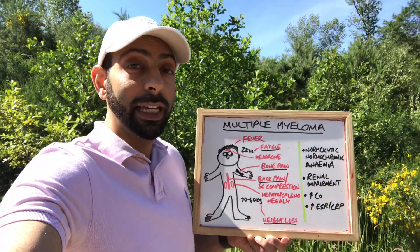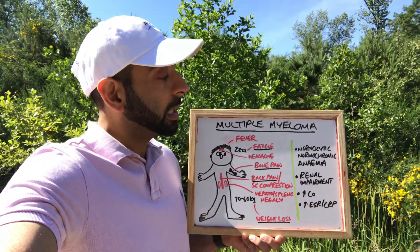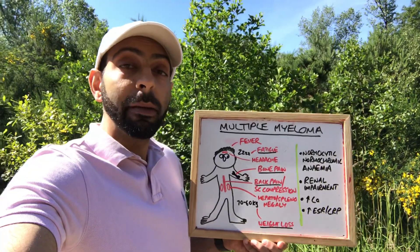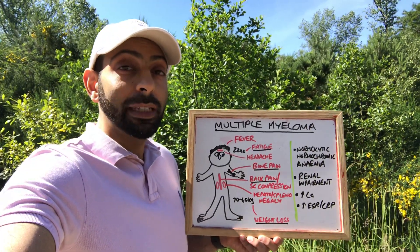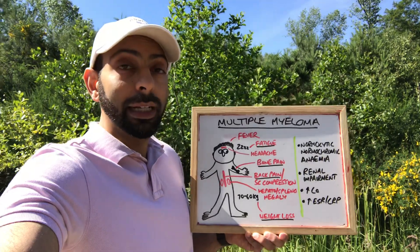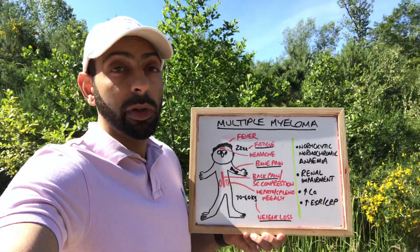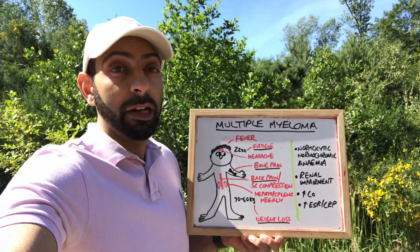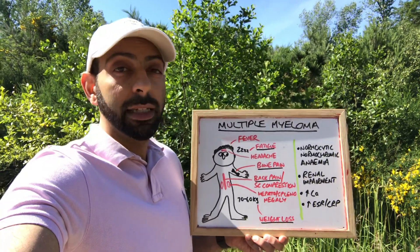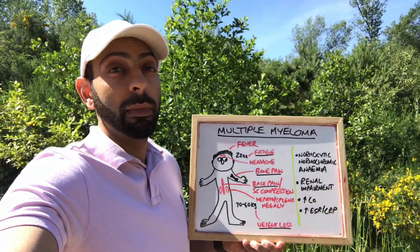In terms of blood tests and investigations, it can present with no symptoms — things like a normocytic normochromic anemia. Renal impairment might be the first presentation of multiple myeloma, and also things like hypercalcemia, which can lead to its own symptoms like abdominal pain and depression, for example. Also raised ESR, raised CRP, and raised plasma viscosity.